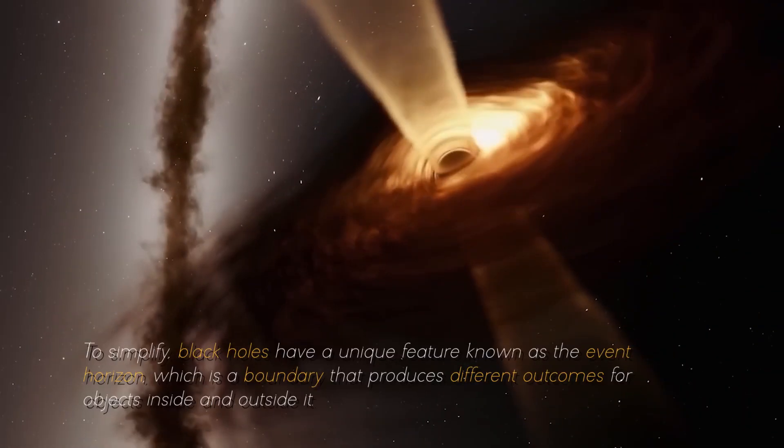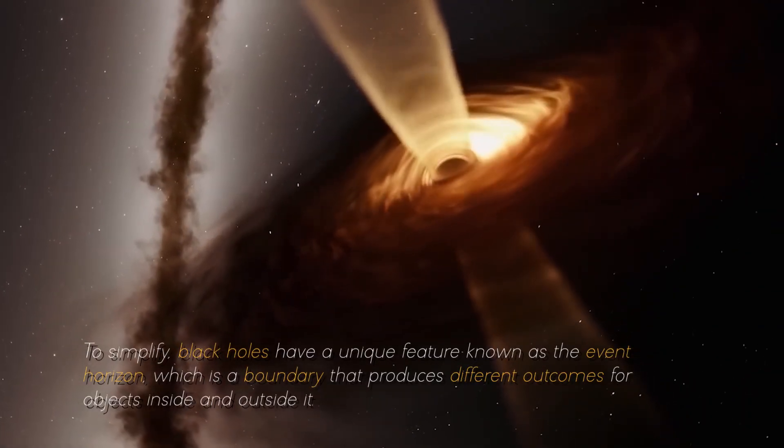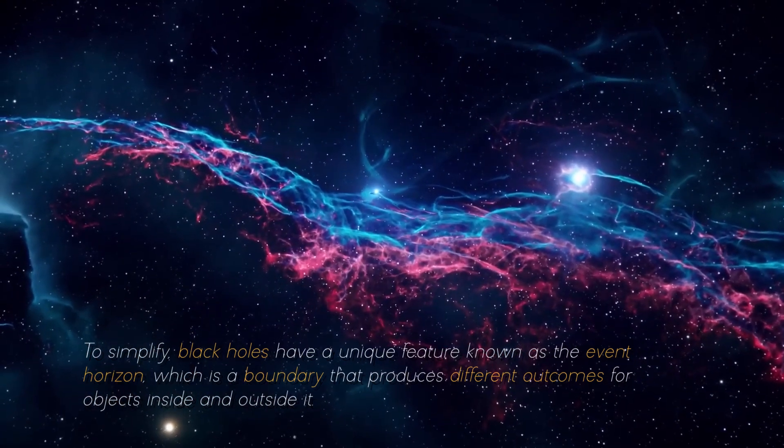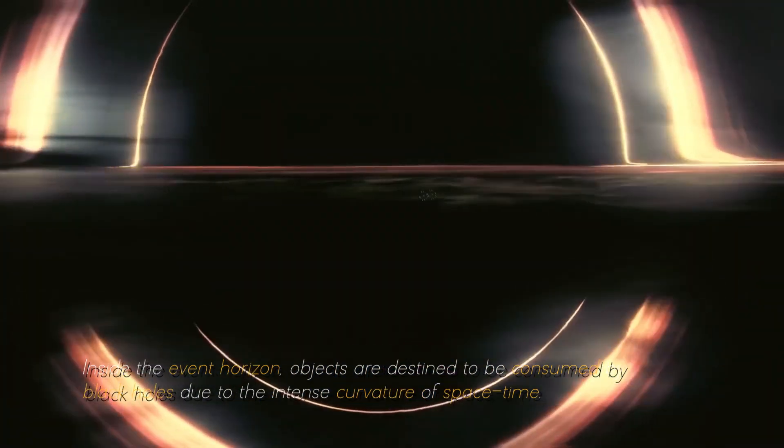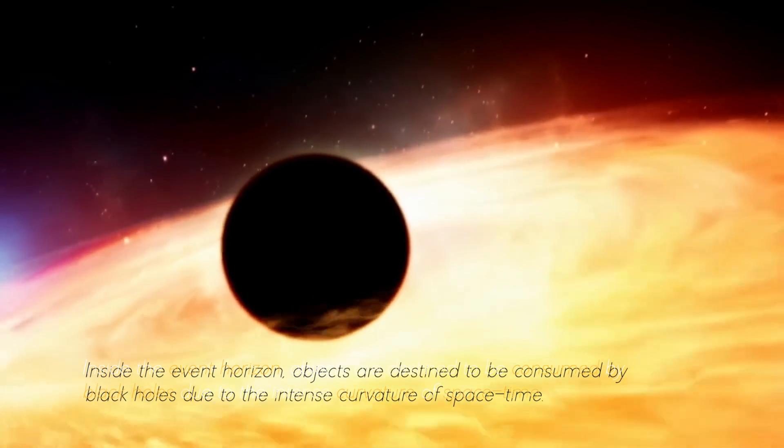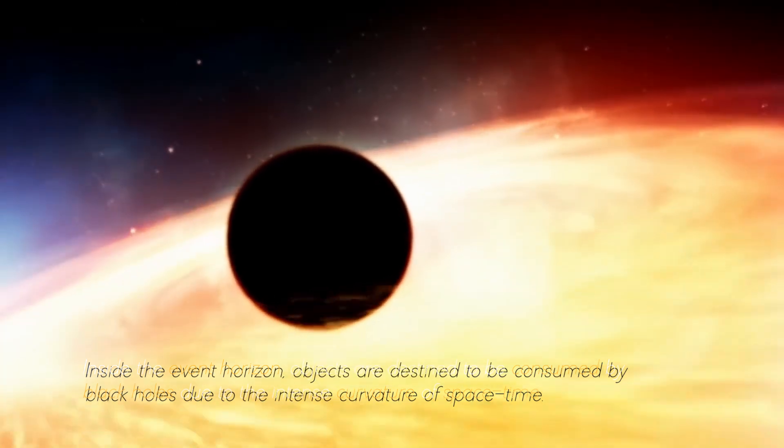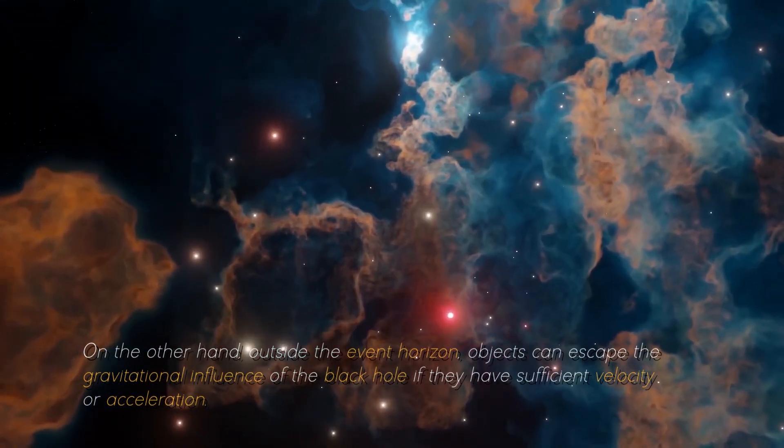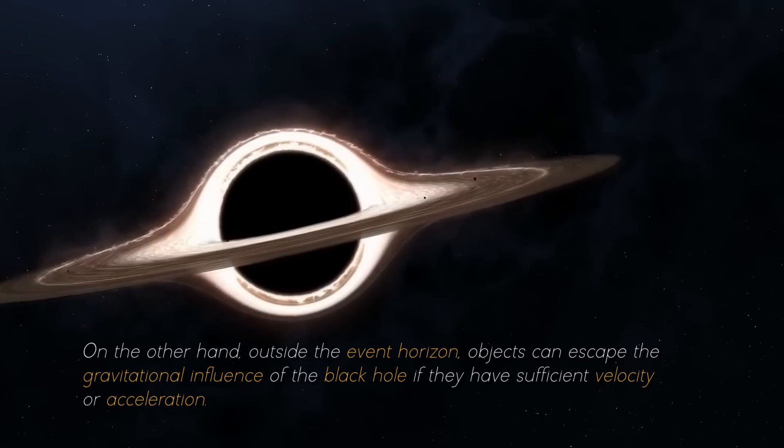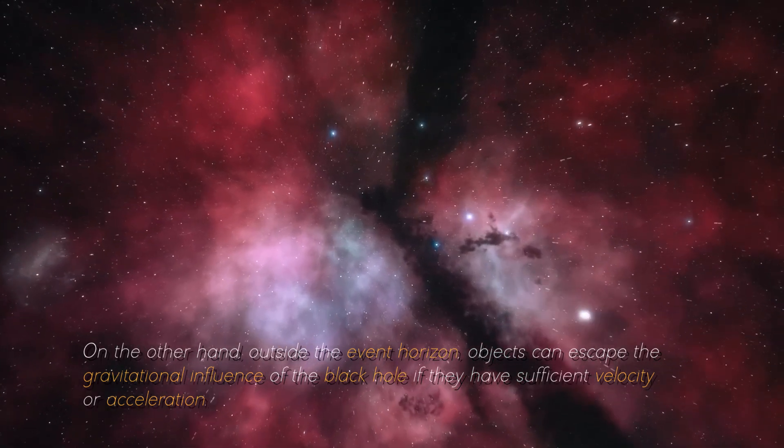To simplify, black holes have a unique feature known as the event horizon, which is a boundary that produces different outcomes for objects inside and outside it. Inside the event horizon, objects are destined to be consumed by black holes, due to the intense curvature of space and time. On the other hand, outside the event horizon, objects can escape the gravitational influence of the black hole, if they have sufficient velocity or acceleration.